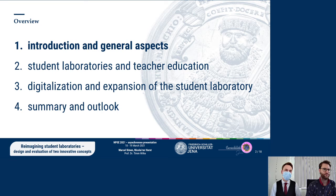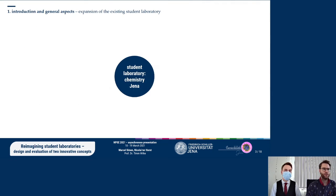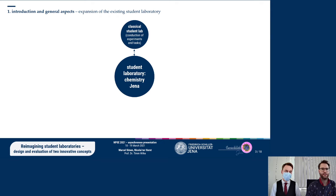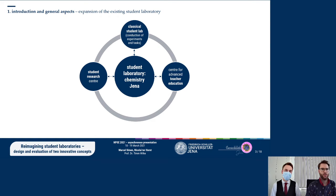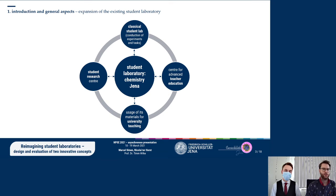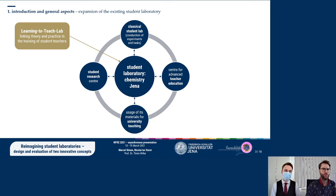The current student laboratory chemistry in Jena is a classical student lab, meaning that its focus lies on the conduction of experiments and related tasks. The student laboratory cosmos also includes a student research center, a center for advanced teacher education, and the usage of its materials in university teaching. To broaden the focus, two changes will be made: first, a learning to teach lab will be created, linking theory and practice in the training of student teachers.